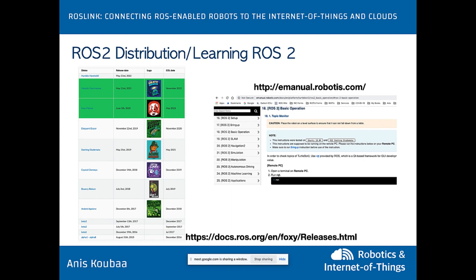ROS 2 use cases include swarm robotics (fully distributed, no centralized master), real-time support through QoS profiles (message prioritization), fast prototyping, and cross-platform support. Current distributions include ROS Foxy (2020, LTS, supported until 2023) and Galactic (May 2021, non-LTS, supported until November 2022). Documentation is at docs.ros.org. LTS versions are recommended as they are supported for five years, with intermediate non-LTS versions released between them.